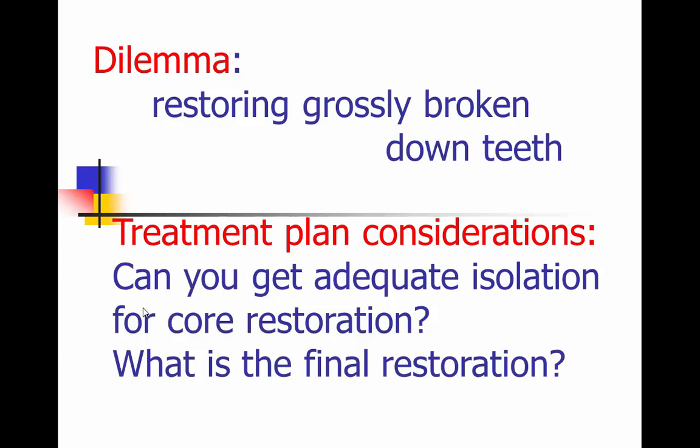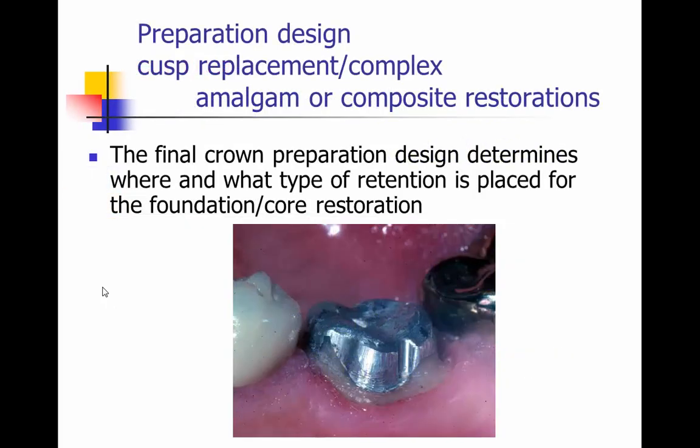Our dilemma is when we're restoring grossly broken down teeth — large restorations being taken out or large caries lesions. Your considerations are: can you get adequate isolation for the core restoration? And what is the final restoration? Is it going to be a crown, an intra-extracoronal inlay or onlay, a CAD-CAM restoration, or a restoration fabricated by the laboratory? When looking at preparation design for cusp replacement, the final crown preparation will determine what type and where retention will be placed in that core foundation.